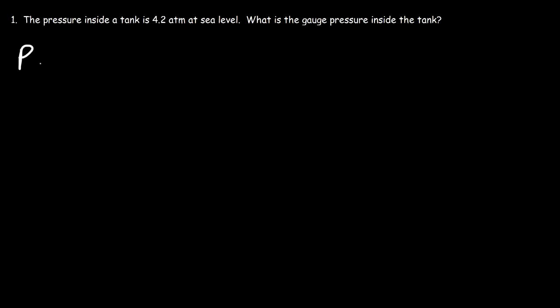The gauge pressure is the difference between the total pressure and the atmospheric pressure — let's call the atmospheric pressure Pa. The total pressure is the same as the absolute pressure. So the gauge pressure is basically the pressure measured relative to the atmospheric pressure.